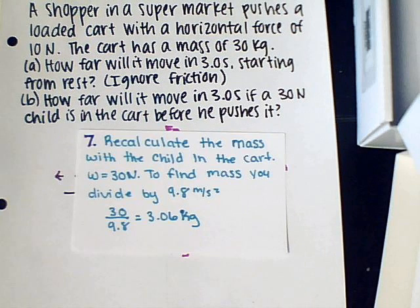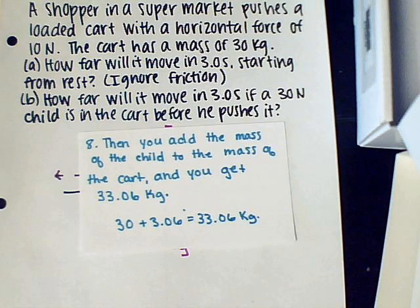Part B. Recalculate the mass with the child in the cart. W equals 30 newtons. To find mass, you divide by 9.8 meters per second squared. 30 divided by 9.8 equals 3.06 kilograms. Then you add the mass of the child to the mass of the cart, and you get 33.06 kilograms.